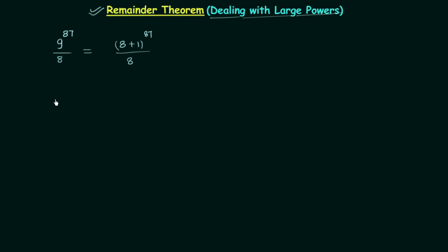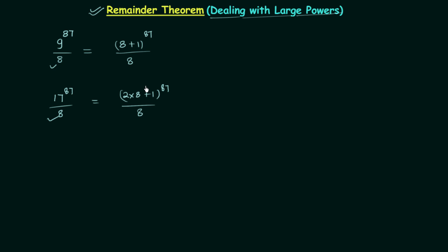I will explain the reason by taking another example. Let's say 17 raised to power 87 is divided by 8. I will write 17 as 2 multiplied by 8 — which is 16 — plus 1. You can see a pattern here: we include the divisor 8 multiplied by some number, and we always have the other term as 1.